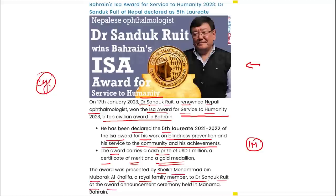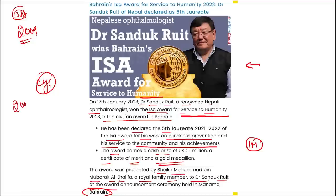The award was presented by Sheikh Mohammad bin Mubarak Al Khalifa, a royal family member, to Dr. Sanduk Ruit at a ceremony held in Manama, Bahrain. The ISA Award for Service to Humanity was established in 2009 by King Hamad bin Isa Al Khalifa, King of Bahrain. Every two years an expert jury selects individuals or organizations. The award is named in honor of Sheikh Isa bin Salman Al Khalifa, former King of Bahrain, and has been presented since 2013.